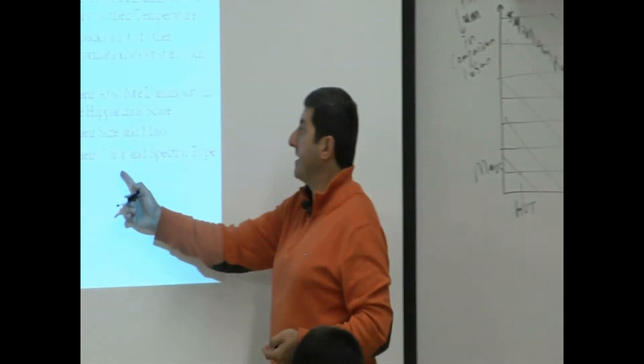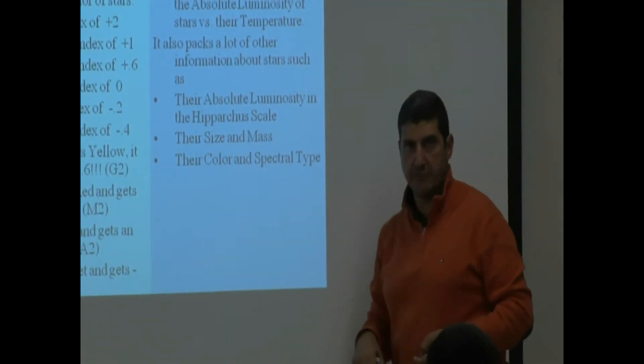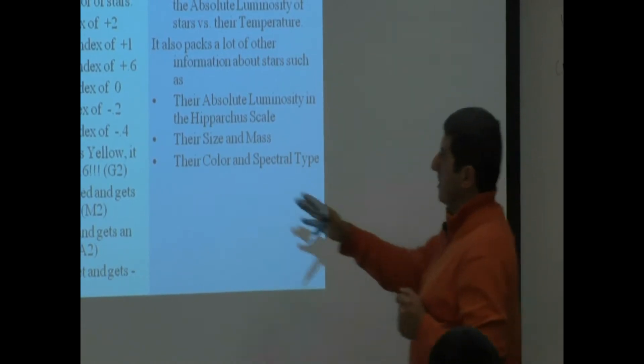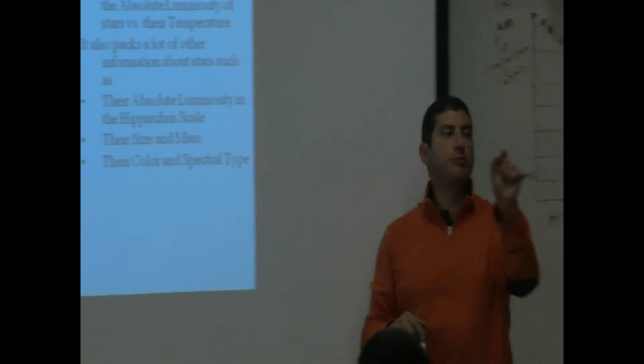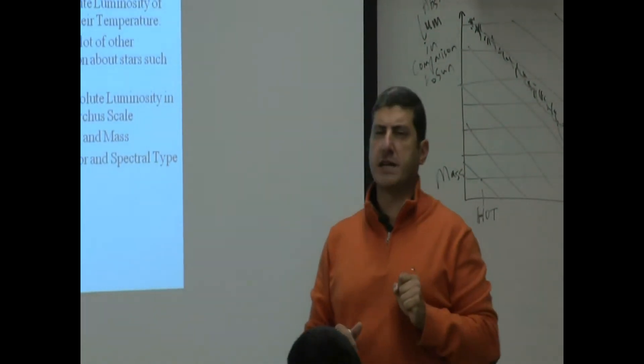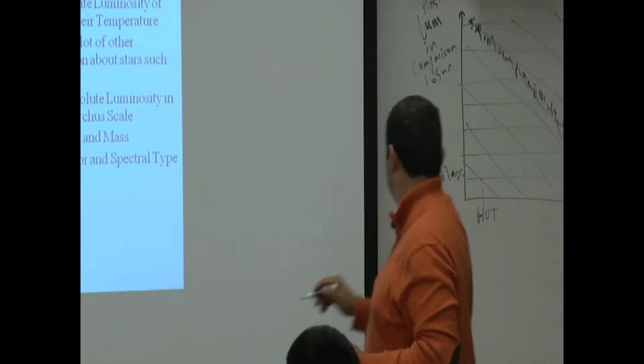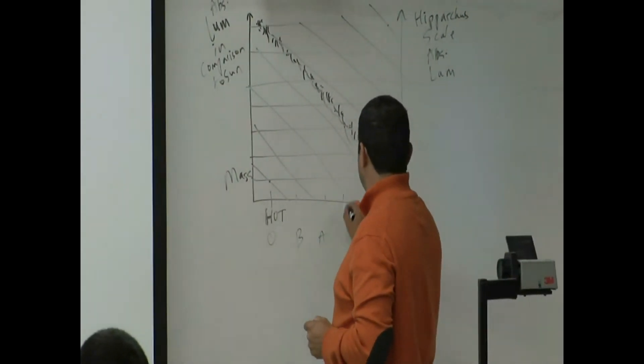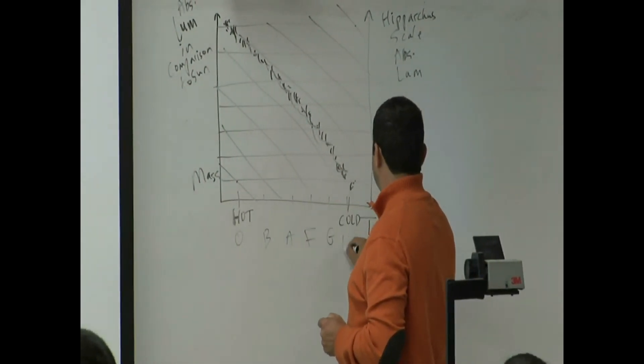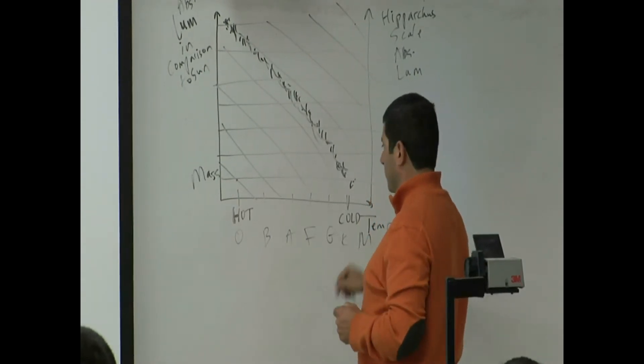Size, mass, their color and spectral type also. Remember we learned on the slide before this, the spectral type with the O, be a fine girl, and kiss me. We learned that the O stars are the hot stars. So we're going to have O, and then B, a fine girl, kiss me. The coldest ones are going to go here.